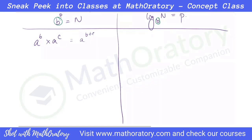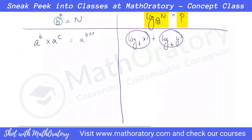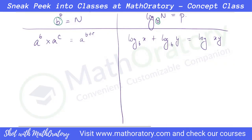So if we do log of x base b plus log of y base b — if you're adding the powers, please understand log itself is a power, the output is a power — then the numbers should get multiplied. So log of x plus log of y to the same base will be log of x times y.